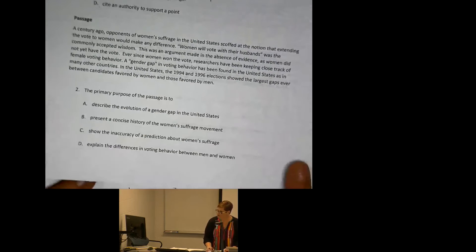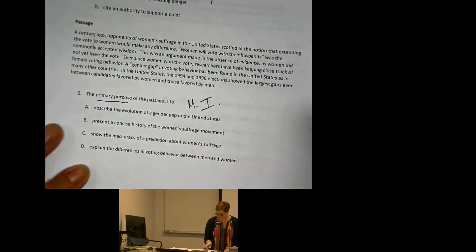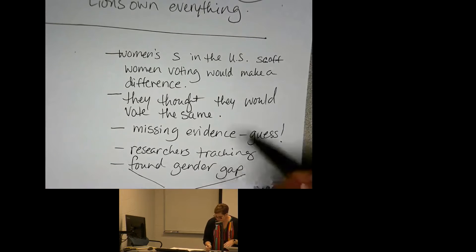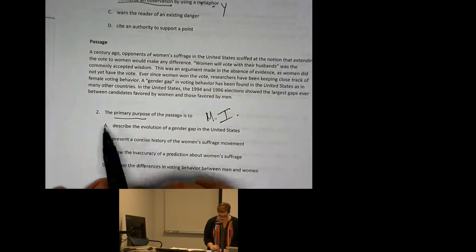That question is a primary purpose question. Primary purpose always means we are looking for the main idea, not the supporting details. Looking at the possible answers: Option A — 'describe the evolution of a gender gap in the United States.' Does this happen in the passage? It does, but it's not what every sentence in the passage is supporting. It's a supporting detail, because it's not the reason the author wrote this passage. That can be confusing to students because they recognize the phrase and think that must be it. But if we remember the difference between main ideas and supporting details, we know that's just a detail.